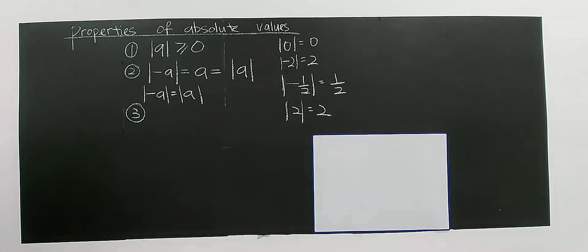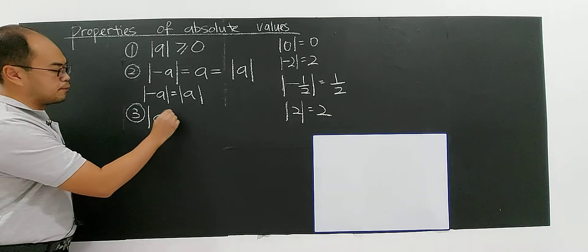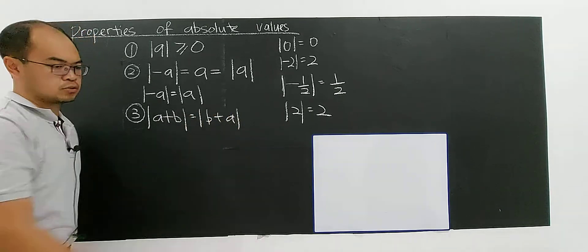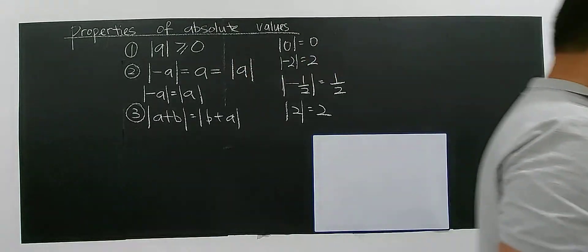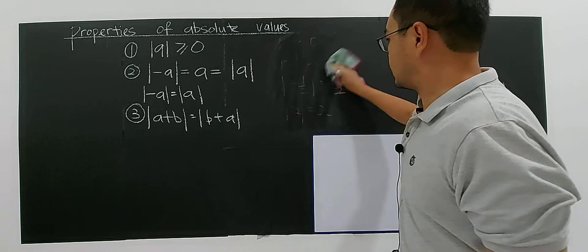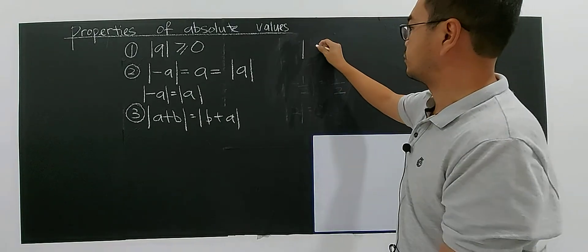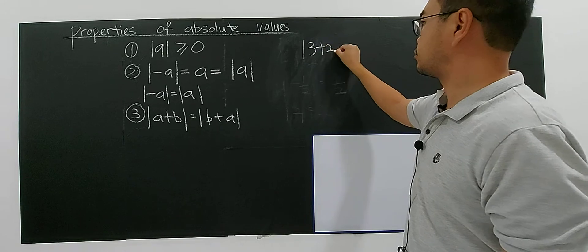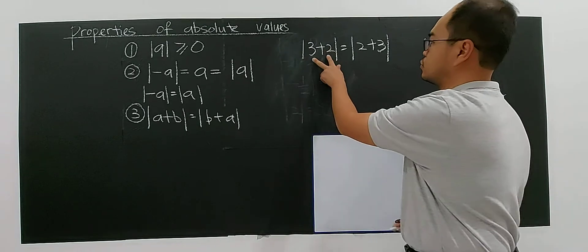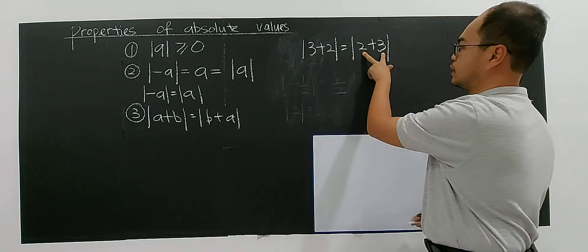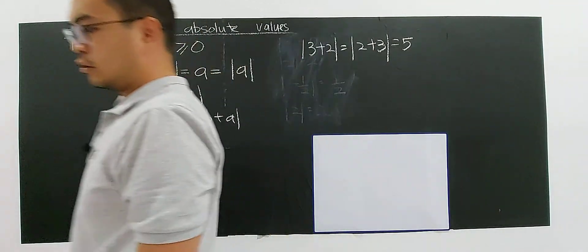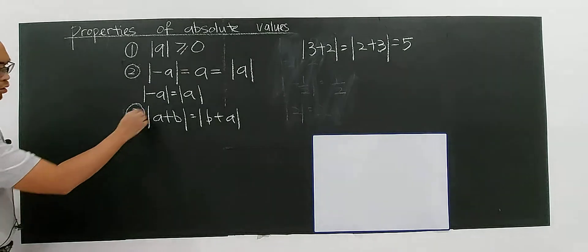The third property is that the modulus of a plus b is the same as the modulus of b plus a. For example, modulus of three plus two equals modulus of two plus three, because both give you five. This is essentially commutative — the order inside the modulus does not matter for addition.